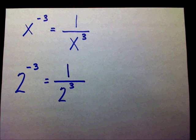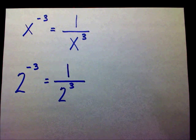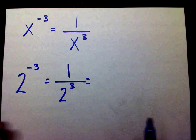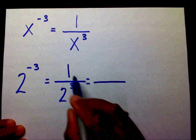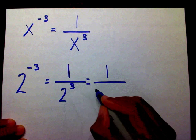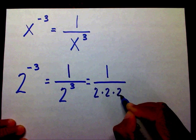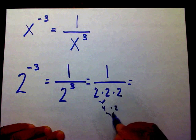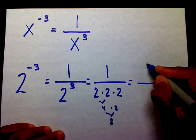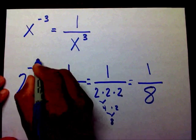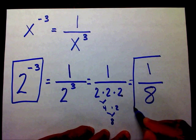Look at my video on multiplying exponents with like bases, and that'll help you out. But I'm going to go through the steps right now, just in case you haven't watched that. So we know that there's a 1 in my numerator and a 2 to the 3rd power in the denominator. That means 2 times 2 times 2. We can simplify: 2 times 2 is 4, times 2 gives me 8. So my answer is 1 over 8. I can say that 2 to the negative 3rd power equals 1 eighth.